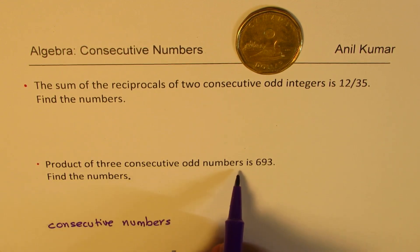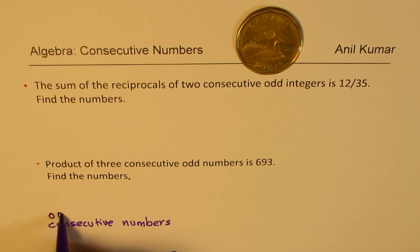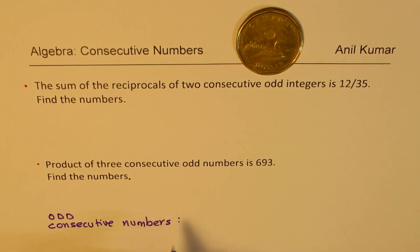But when I write odd numbers, we have to look for odd consecutive numbers. So what will be odd consecutive numbers? Well, the odd consecutive numbers will be like 3, 5, 7, 9, 11 and so on.